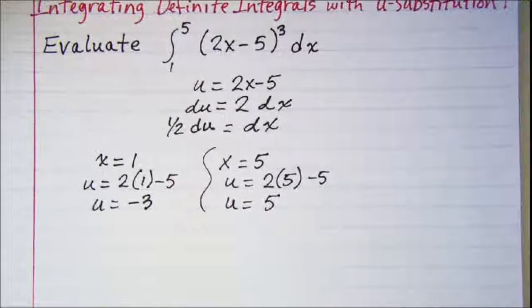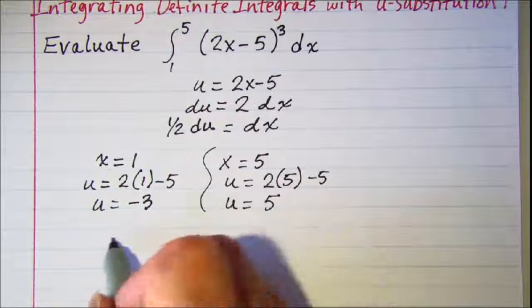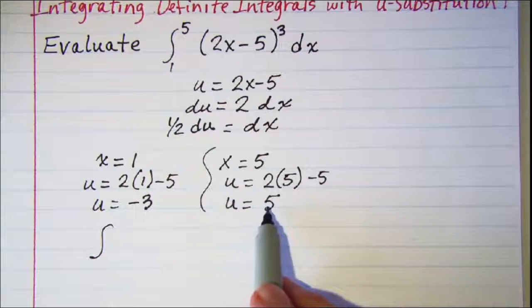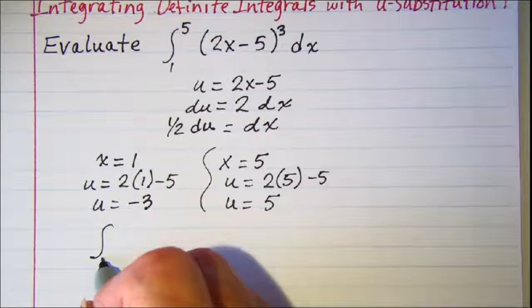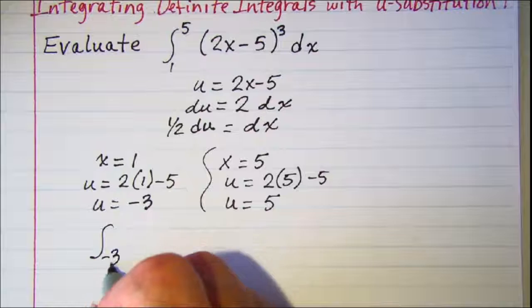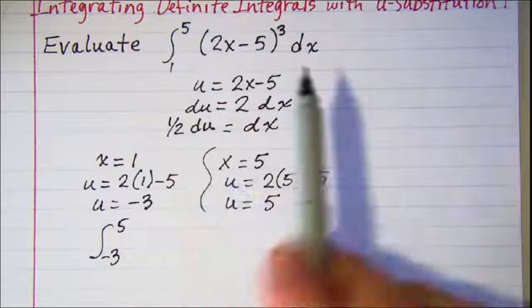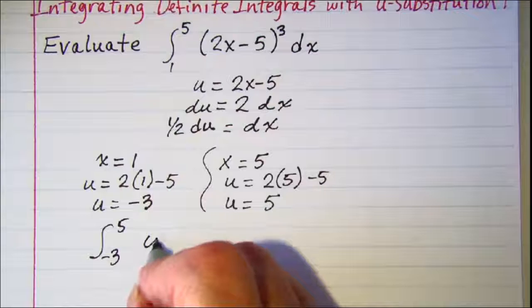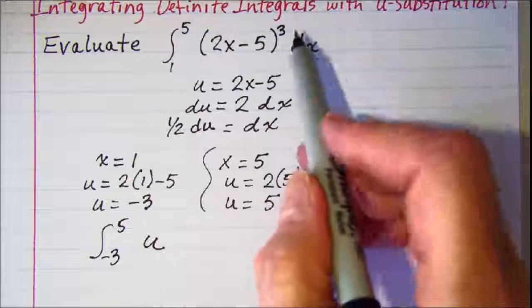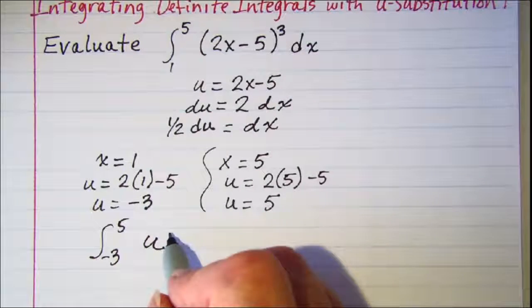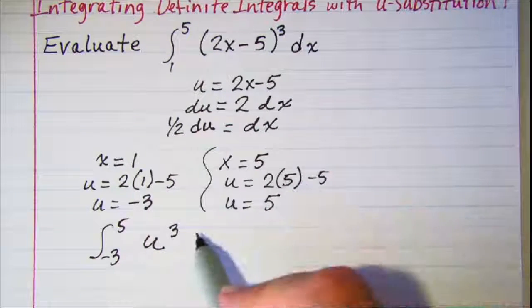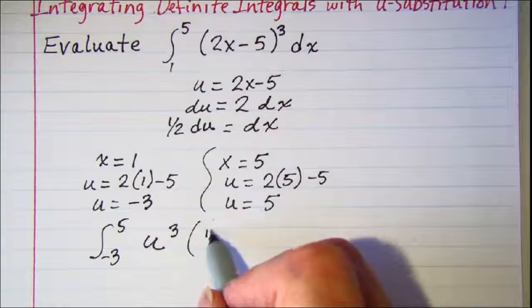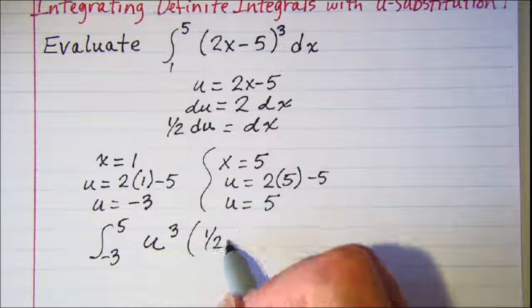Now we can do our substituting. We're integrating from negative 3 to 5 of u to the third power, and then in place of dx we put in one half du.